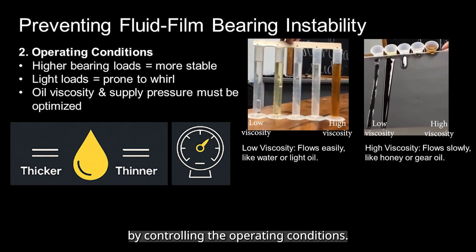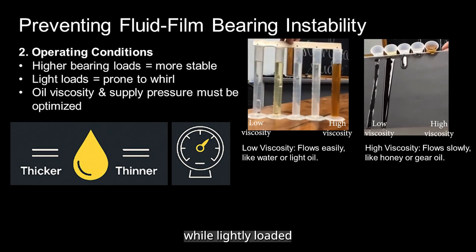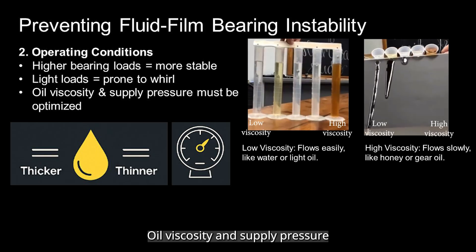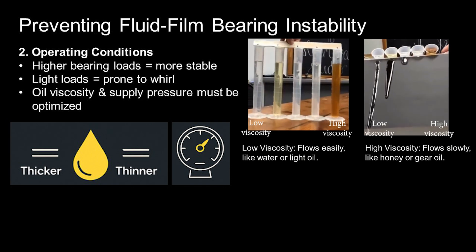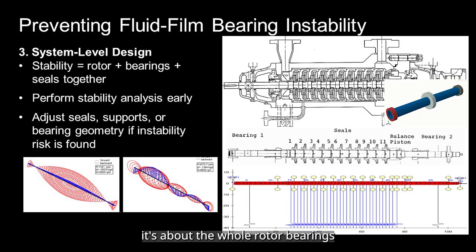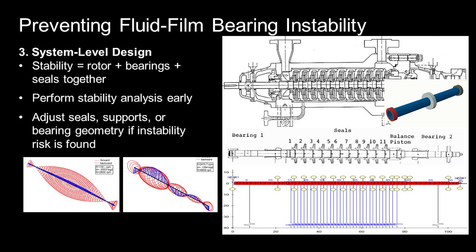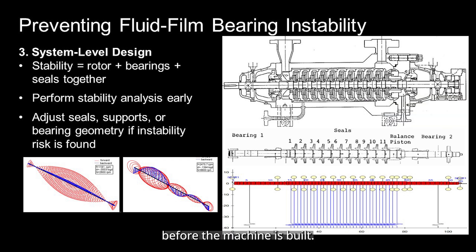Instability can also be managed by controlling the operating conditions. Higher bearing loads generally improve stability, while lightly loaded bearings are more prone to whirl motion. Oil viscosity and supply pressure also matter — proper selection ensures a more stable oil film. Stability isn't just about the bearing itself; it's about the whole rotor-bearing-seal system. Engineers use stability analysis to make sure the rotor's first critical speed and damping are adequate. If the analysis shows instability risk, changes can be made to seals, support structures, or bearing geometry before the machine is built.